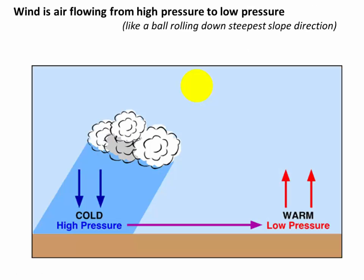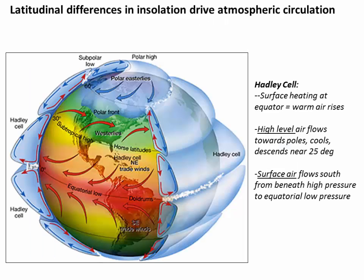Why are there air pressure differences in the first place? This brings us back to solar insolation. We get much higher solar insolation at the equator, so the land surface warms up a lot more there than in the Arctic. That warmer ground surface warms the air, creating low-pressure air masses that start to rise.